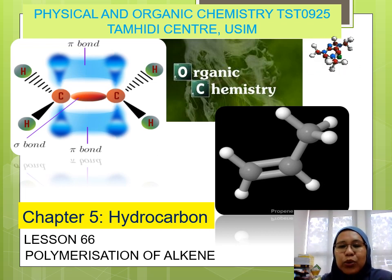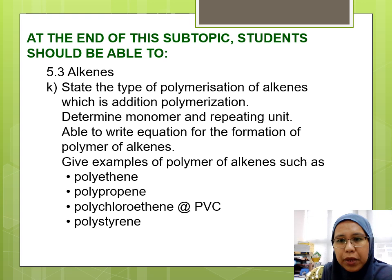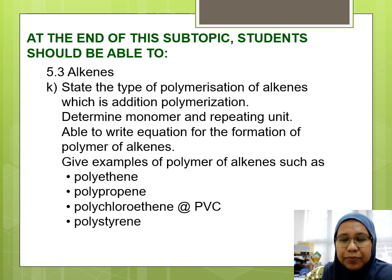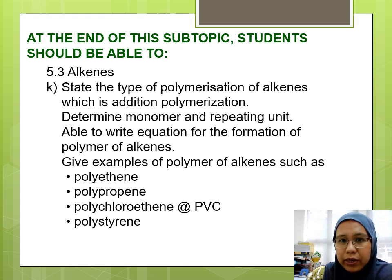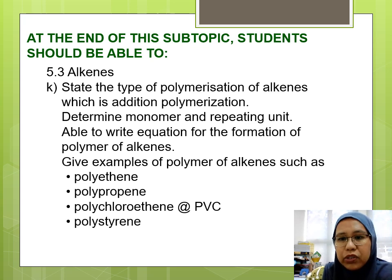We have already learned this, so this is basically a revision for us. We should be able to state the type of polymerization for alkenes, i.e. addition polymerization. We need to determine the monomer, the repeating unit, and we need to be able to write equations for the formation of certain polymers of alkenes — for example, polyethene, polypropene, PVC, and polystyrene.